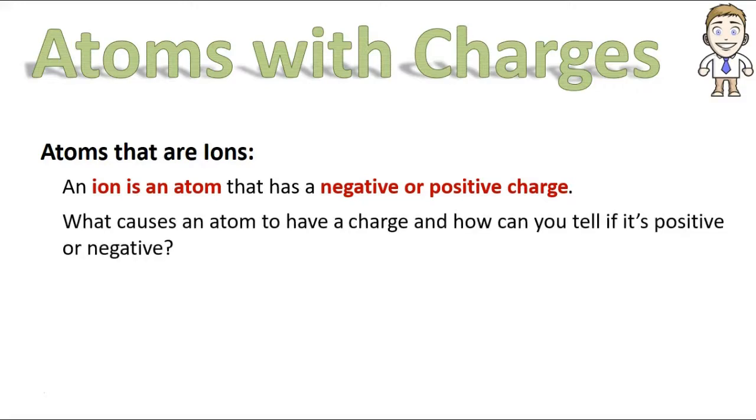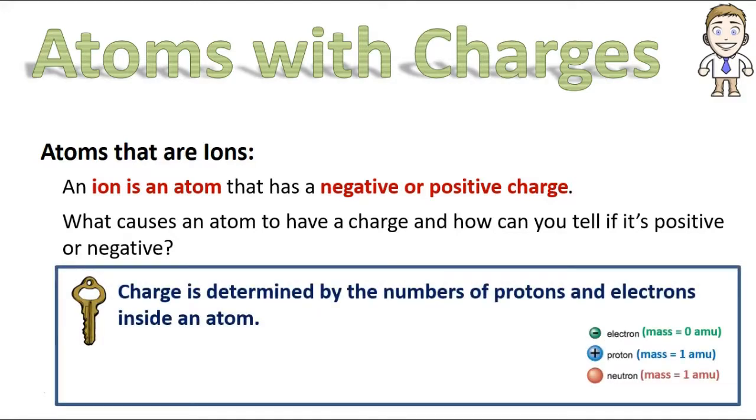The real question is, what causes these atoms to get this charge? How do you tell if it's positive or negative? The answer to that is pretty simple too. Charge is determined only by the number of protons and electrons in the atom, which makes sense because those are the only two particles with a charge at all. Neutrons are neutral, so of course they're not going to affect the charge the atom has.